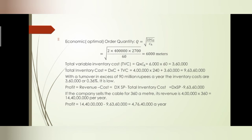Total inventory cost = D into unit price plus TVC. That is 4,00,000 into 240 plus 3,60,000 gives approximately Rs. 9 crore 63 lakh 60,000.